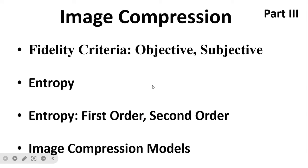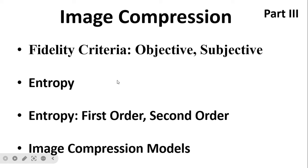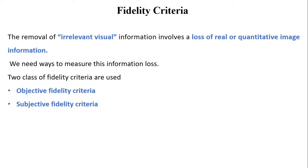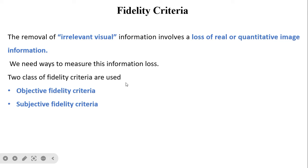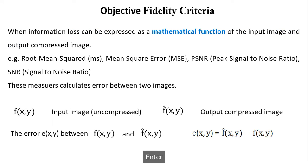Welcome to this video on image compression part 3. In this video I am going to discuss fidelity criteria, entropy, and the image compression model. The removal of irrelevant visual information involves a loss of real or quantitative image information, and we need ways to measure this information loss. Two classes of fidelity criteria are used: objective fidelity criteria and subjective fidelity criteria.